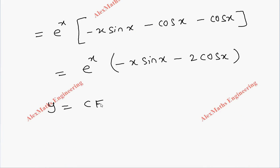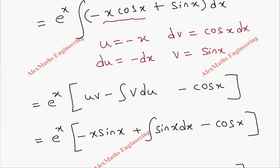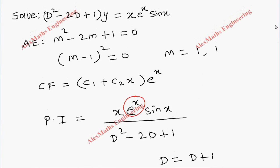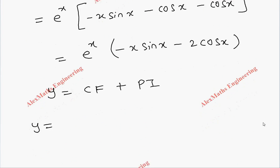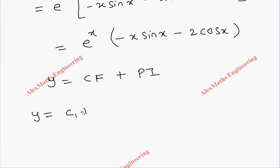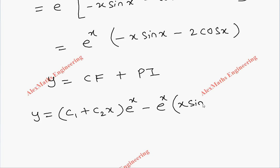Finally, we write the complete solution as y = CF + PI. The CF is (c1 + c2·x)·e^x. Taking minus common from the PI, the complete solution is y = (c1 + c2·x)·e^x - e^x·(x·sin(x) + 2·cos(x)).